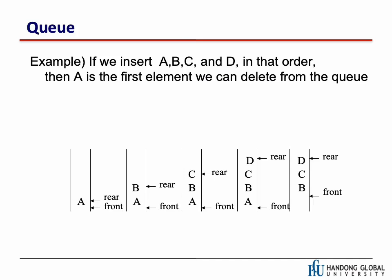Here is a specific example to understand how a queue works. If we insert a, b, c, d in that order, then a is the first element we can delete from the queue. This figure is similar to a stack, but different because we have two sides. In the stack we had just the top side open and the other side closed, but in the queue we have rear and front. Whenever we insert something, we put it through the rear side. When we delete, we delete from the front, not from the rear — that's the key difference compared to the stack.